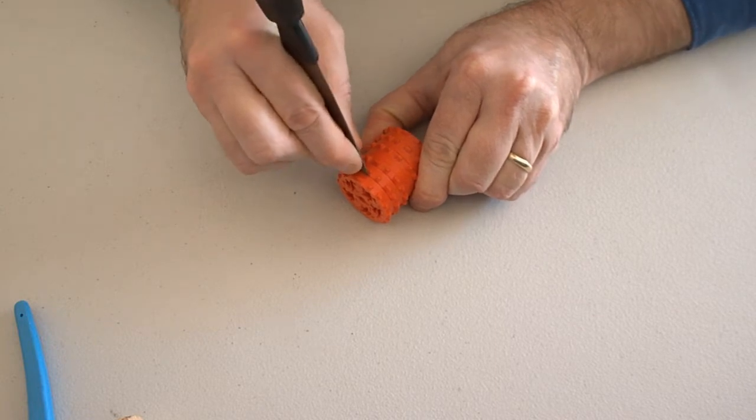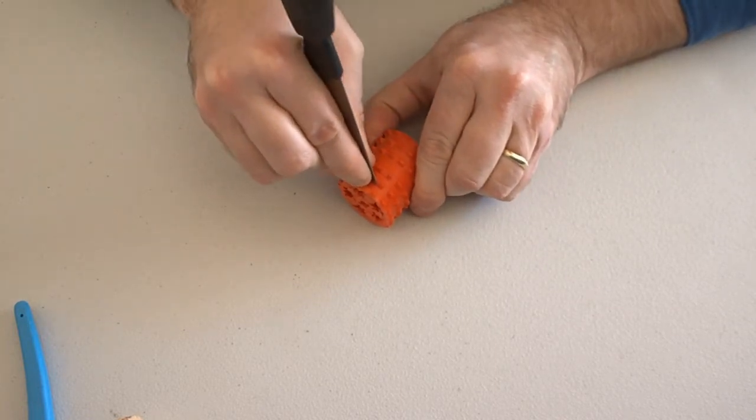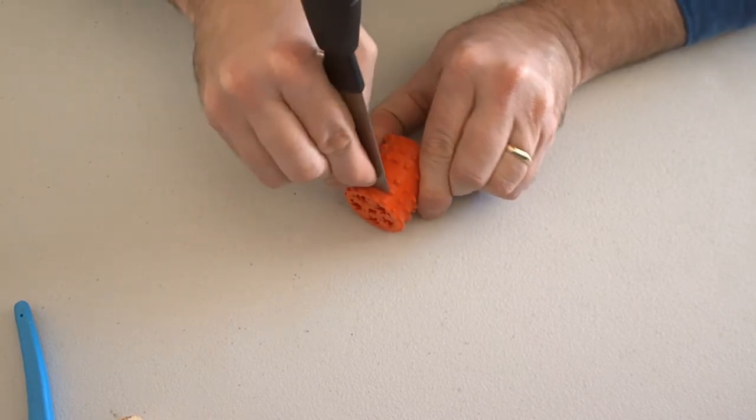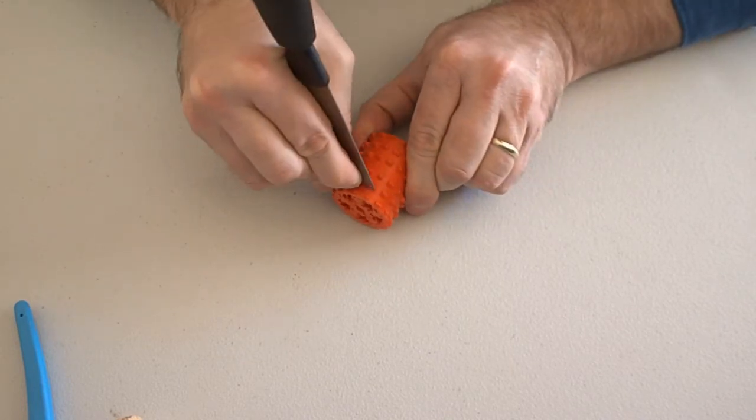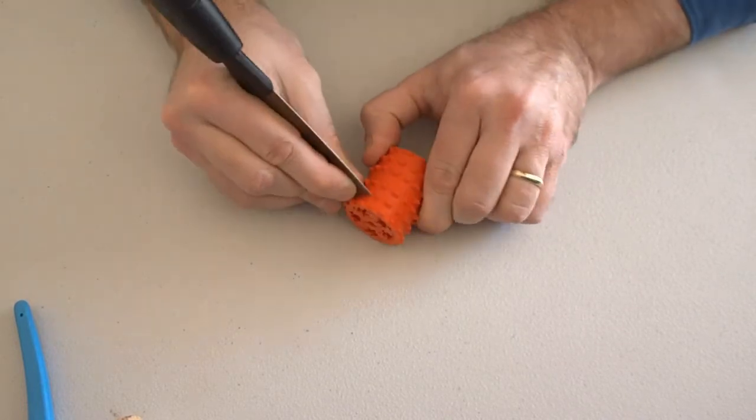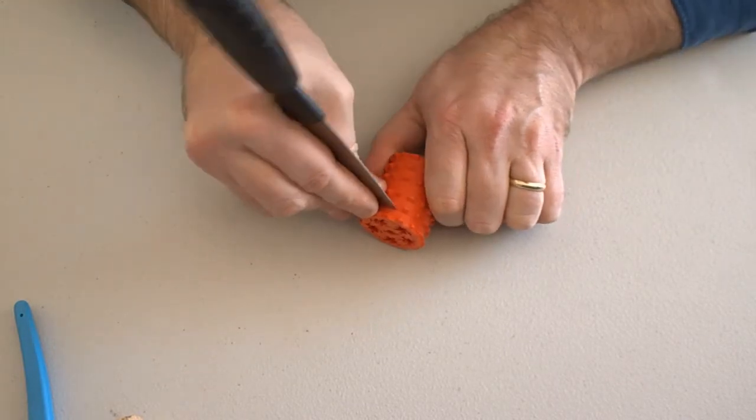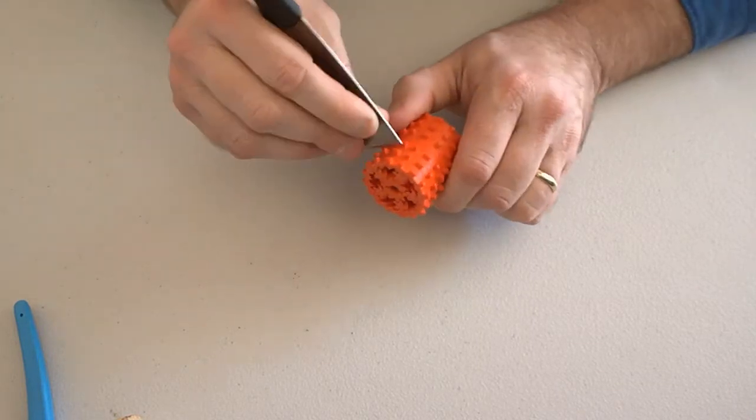So we just want to insert that into the gap until we hear that crack. And that crack is the sound of the layers delaminating, which is all we need. We don't need to go deep. We don't need to go all the way. We just need to get it started. And as long as we have a good crack all the way around we should be good to go.